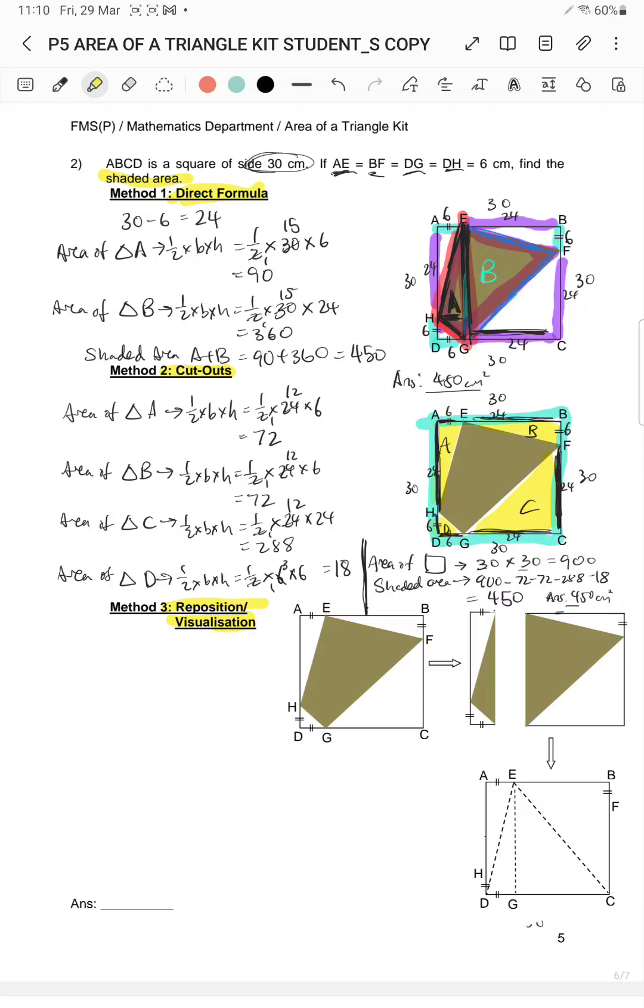Then you'll be able to solve it with just a few steps only. Now in this case, let us break up the shaded area first. A little bit like the direct formula, but when you break it out you will realize that it is actually half of each of this rectangle.